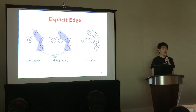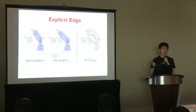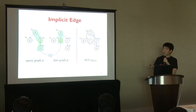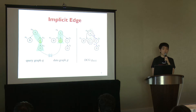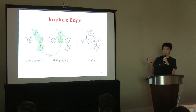Here we have a query graph Q and a data graph G. A data edge V0, V3 matches a query edge U0, U2, and V3 also has a sub-tree that matches the sub-tree of U2. So this match can contribute to a complete solution. The DCG stores this match as an explicit edge (V0, U2, V3) as shown in the figure on the right side. However, another data edge V0, V2 matches the same query edge U0, U2, but this match cannot contribute to a complete solution because V2 does not have any sub-tree that matches the sub-tree of U2. In this case, the DCG stores this match as an implicit edge (V0, U2, V2) as shown in this figure.